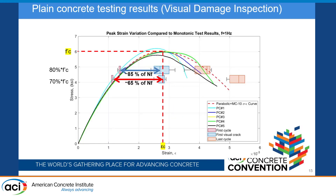We also placed two GoPro cameras on two sides of the concrete specimen. During the testing we took pictures every few seconds, and we observed that the first visual damage appears on the concrete around the strain corresponding to the stress-strength level. This can be used for monitoring purposes.